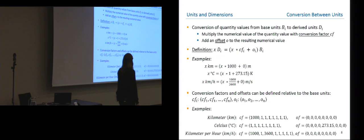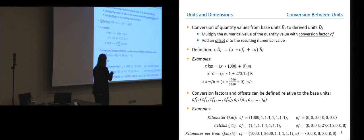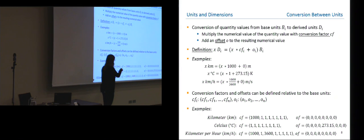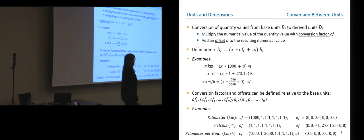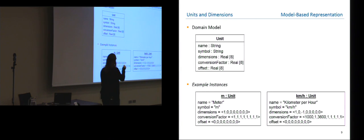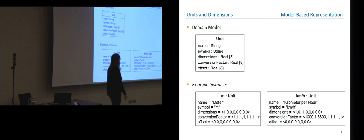Since we are working on software models, how would we define units in a modeling language? We introduce a type Unit with attributes for its name, symbol, a dimensions tuple, a conversion factor tuple, and an offset. Here you see concrete instances given as object diagram representations of the examples we just discussed.